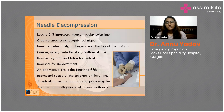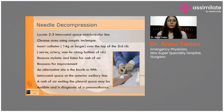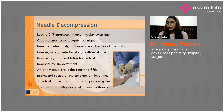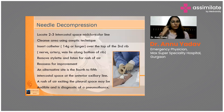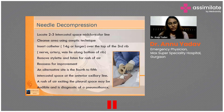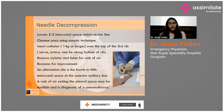For needle decompression, the first method is over the second intercostal space — that is, between the second and third rib. Locate the second intercostal space at the mid-clavicular line: locate your clavicle, find the second and third ribs just below that at the mid-clavicular line. You will go ahead with a large bore cannula or catheter — 14 gauge or 16 gauge — and pierce directly at 90 degrees.